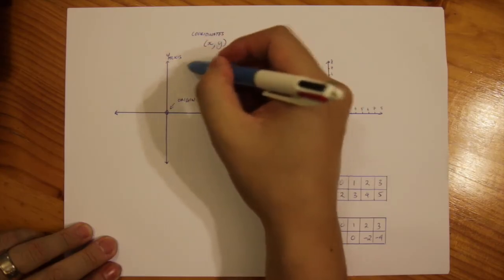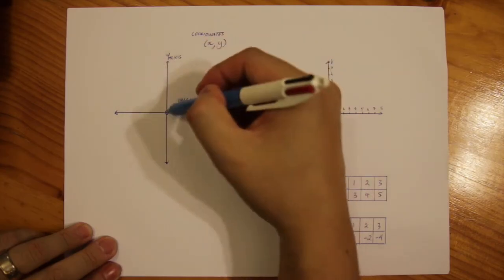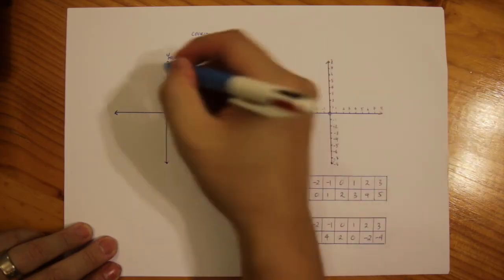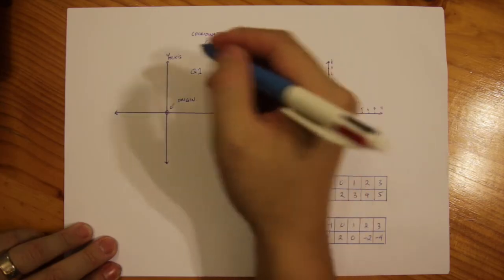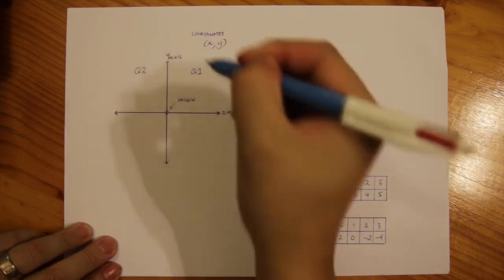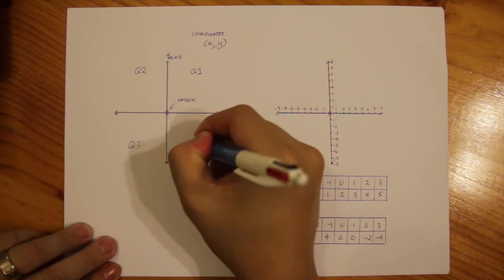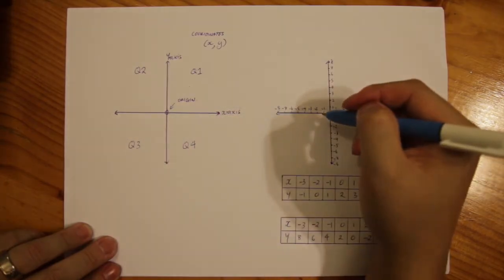Start off with your top right corner where both axes are positive. So quadrant one and then go anti-clockwise. Quadrant two, quadrant three and then quadrant four down the bottom right.